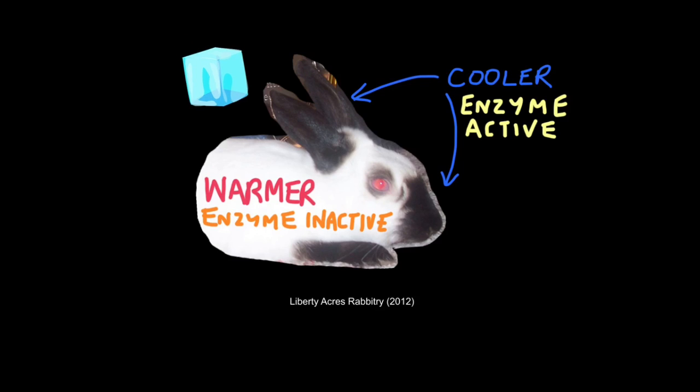So what you can do, is if you place an ice cube onto the white part of the body, and leave it there for a bit, the cooler conditions will activate the enzyme, and melanin will be produced. So when you lift off the ice cube, you have black fur. Pretty amazing.